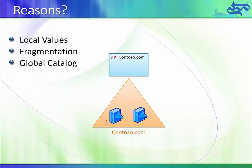If the domain controller on the left wants to replicate a user account to the domain controller on the right, it uses the domain partition — called contoso.com in this case — to initiate replication and inform the other domain controller about the change. That triggers synchronization and the user account is replicated.